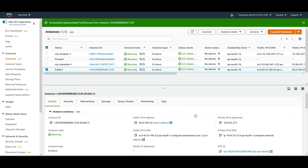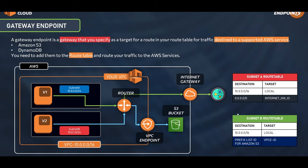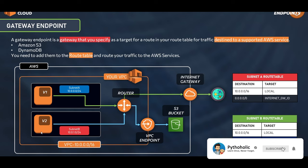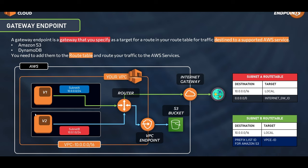For the demo, we need a public instance that can connect through an internet gateway to access S3 buckets — that's one approach. The other is a private instance which should be able to access the S3 bucket using a VPC endpoint, and that is our main goal. We'll have one public instance and one private instance and see the differences.